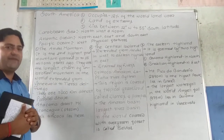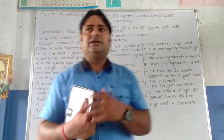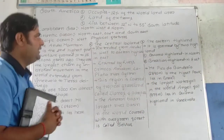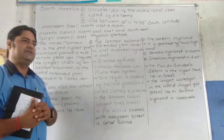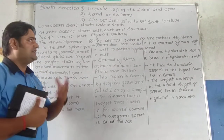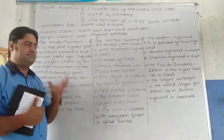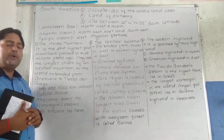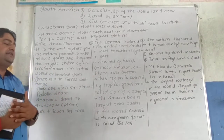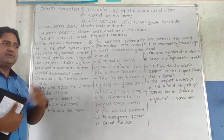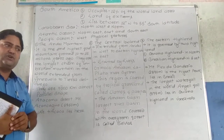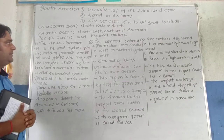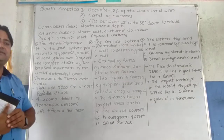South America is also famous for its extreme length. It lies between 12 degrees north and 25 degrees south latitude. In the north and northwest, there lies the Caribbean Sea. In the world map, the Caribbean Sea has already been asked in the examination, so Caribbean Sea lies in the northwest and northern part of South America. Similarly, the Atlantic Ocean lies in the northeast.